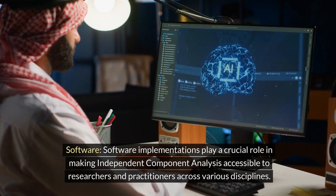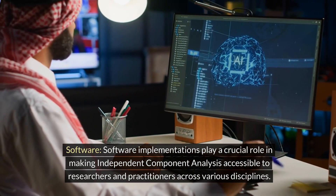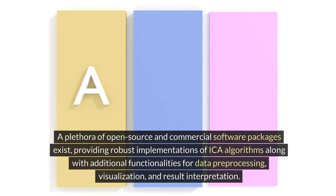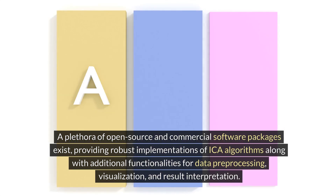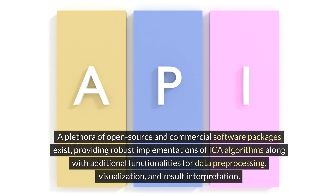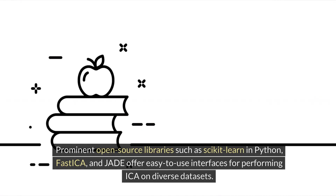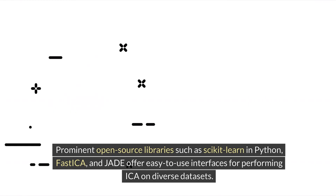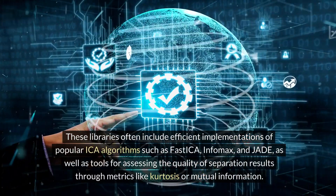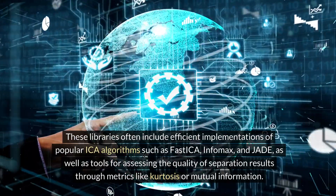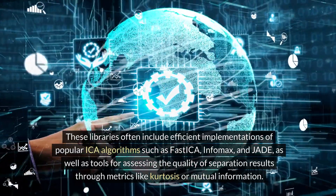Software implementations play a crucial role in making independent component analysis accessible to researchers and practitioners across various disciplines. A plethora of open-source and commercial software packages exist, providing robust implementations of ICA algorithms along with additional functionalities for data preprocessing, visualization, and result interpretation. Prominent open-source libraries such as scikit-learn in Python, FastICA, and Jade offer easy-to-use interfaces for performing ICA on diverse datasets. These libraries often include efficient implementations of popular ICA algorithms such as FastICA, Infomax, and Jade, as well as tools for assessing the quality of separation results through metrics like kurtosis or mutual information.